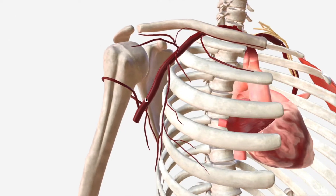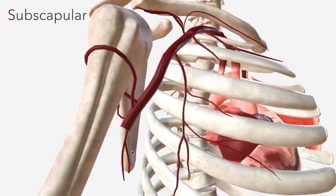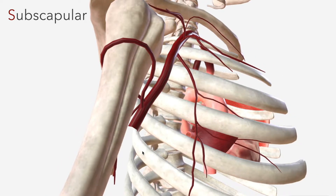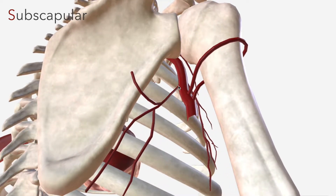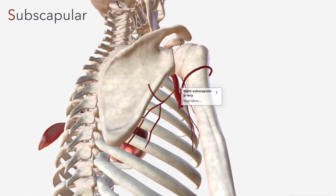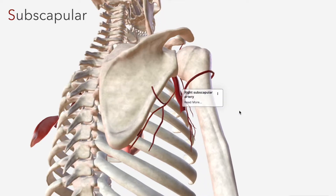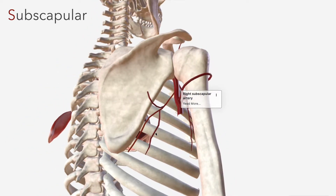Then we have S again for subscapular artery. Moving around posteriorly to map out the course of that branch, it extends to branch across the lateral border of the scapula, contributing to the scapular anastomosis, and another of its branches supplies the latissimus dorsi muscle.